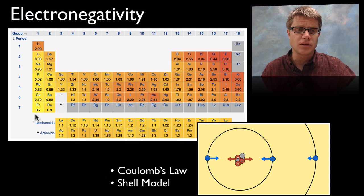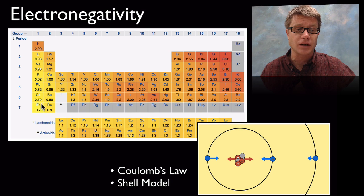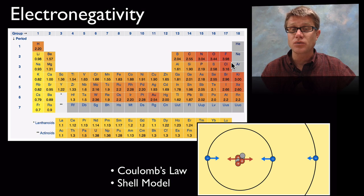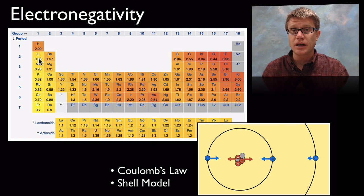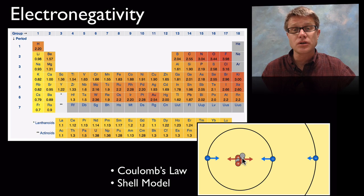So here's that electronegativity. Remember as we go up on the periodic table it's going to increase, and then as we go across it's going to increase as well. Now why is it increasing when we go up? It's because the atoms are becoming smaller. As the atoms become smaller, those electrons are closer to the nucleus, and so there's going to be a greater charge.